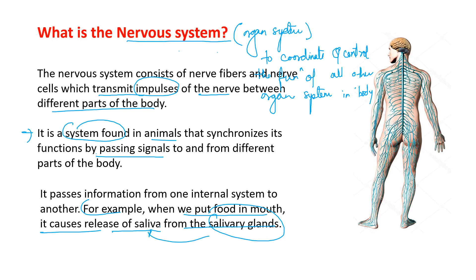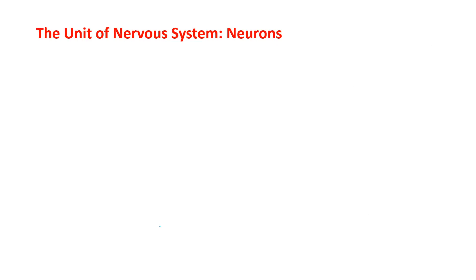The nervous system is divided into two types: the central nervous system and the peripheral nervous system. Now, neurons are the unit of the nervous system — this is a very important point that often comes in exams. You get objective questions on this particular point, so keep in mind that neurons are the unit of the nervous system.